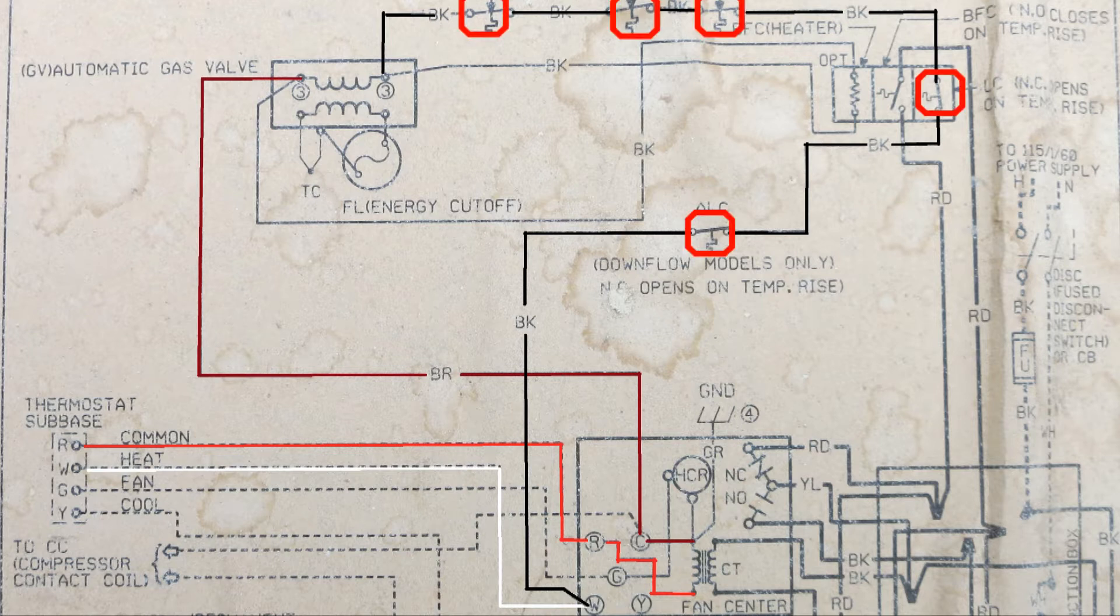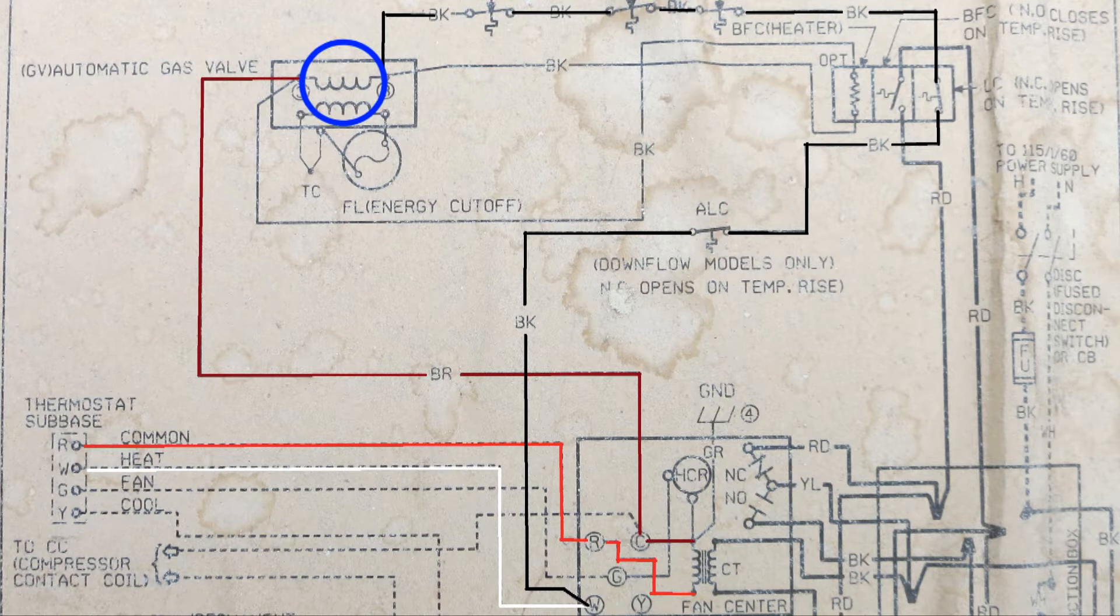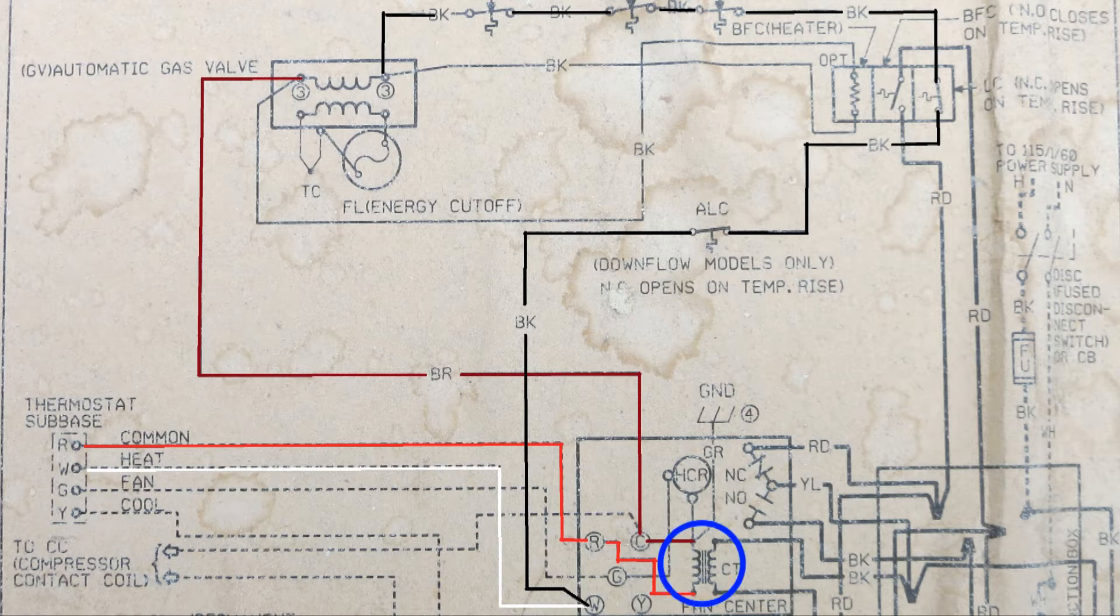Before it gets to the gas valve, if all sensors are working, the gas valve will get energized and the furnace will then be able to kick on to have gas. You can see the brown wire continues on and it completes the circuit at the transformer.